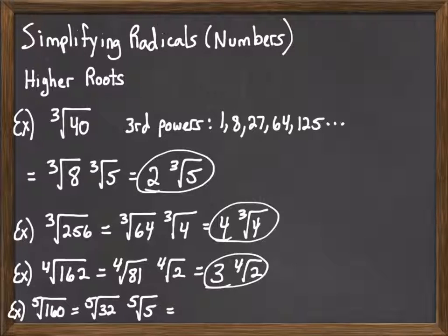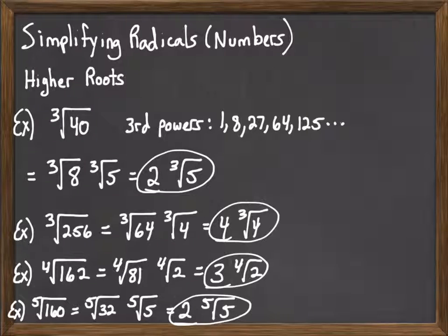So we can rewrite that as 5th root of 32 times the 5th root of 5. And then we simplify. 5th root of 32 we can do. 5th root of 32 is 2. And then 5th root of 5 will be left over. So it would be 2 and the 5th root of 5.